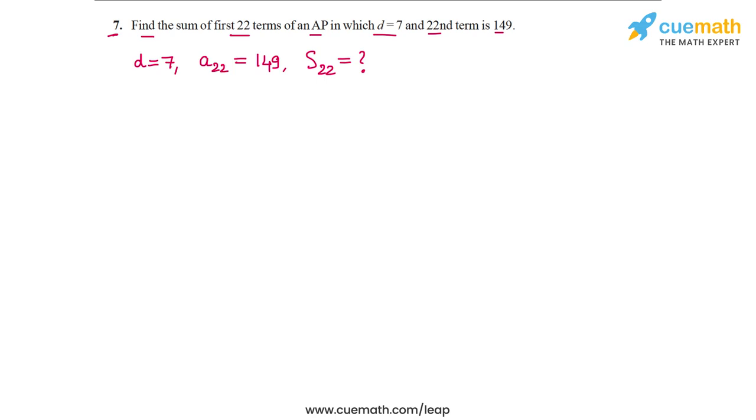So to do this, let's first find the first term of the AP. Let's assume that the first term is equal to A and we are going to make use of the relation A_N. The Nth term is equal to A plus N minus 1 into D.